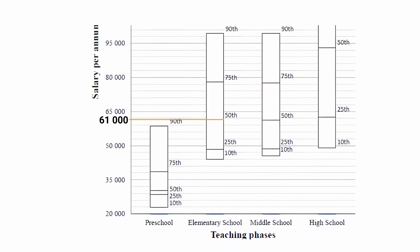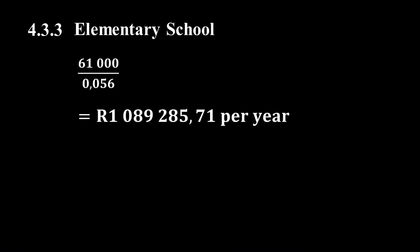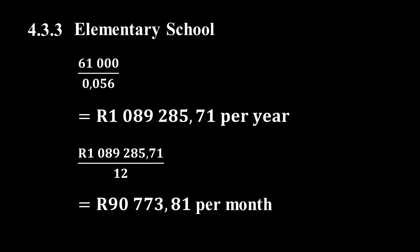Next, the monthly salary for an elementary school teacher is calculated. The annual salary of 61 000 US dollars is divided by the exchange rate of 0.056 dollars per rand, giving an annual salary of 1 089 285 rand 71 cents. Dividing this by 12 months gives a monthly salary of 90 773 rand 81 cents per month.